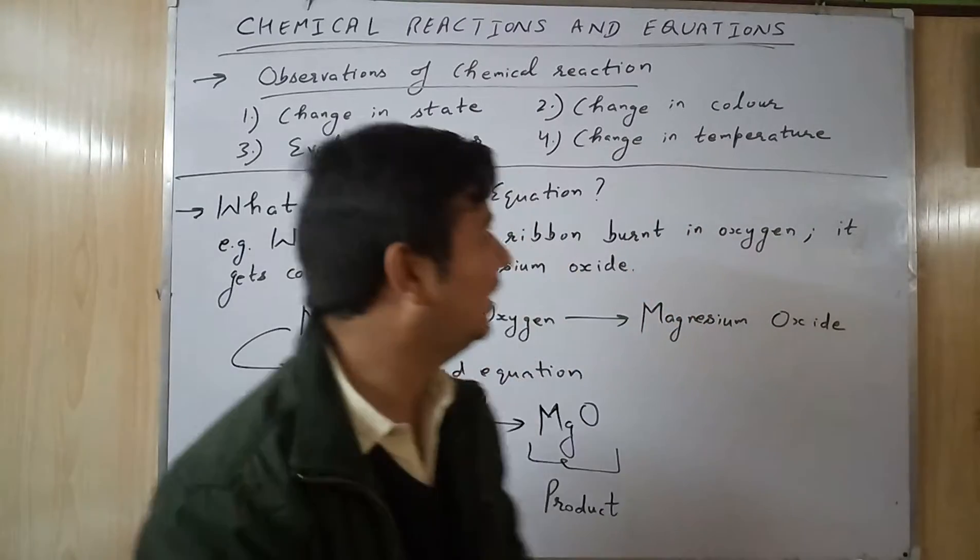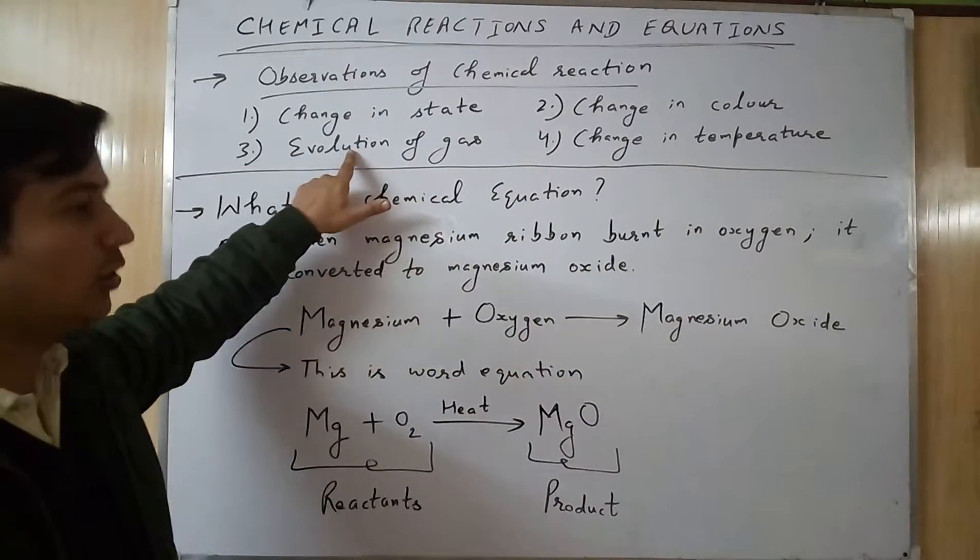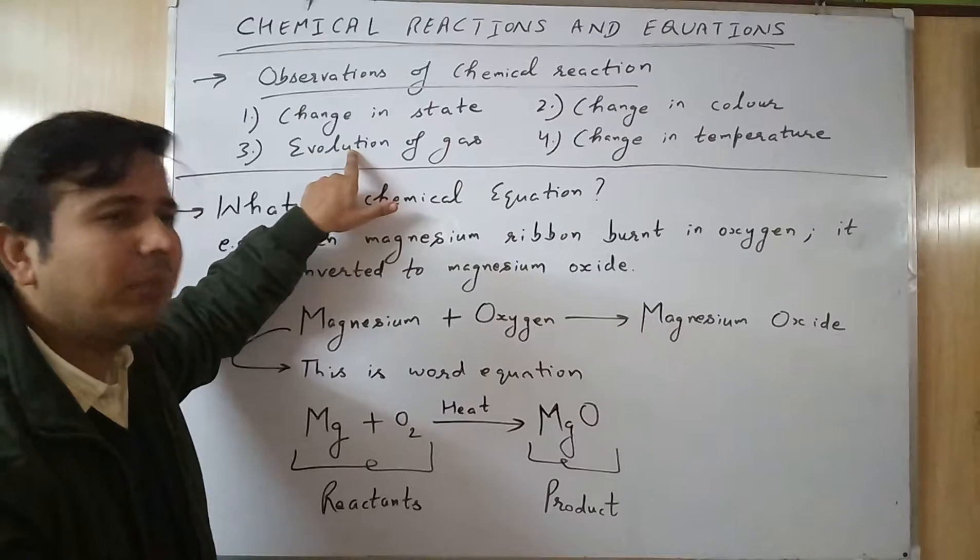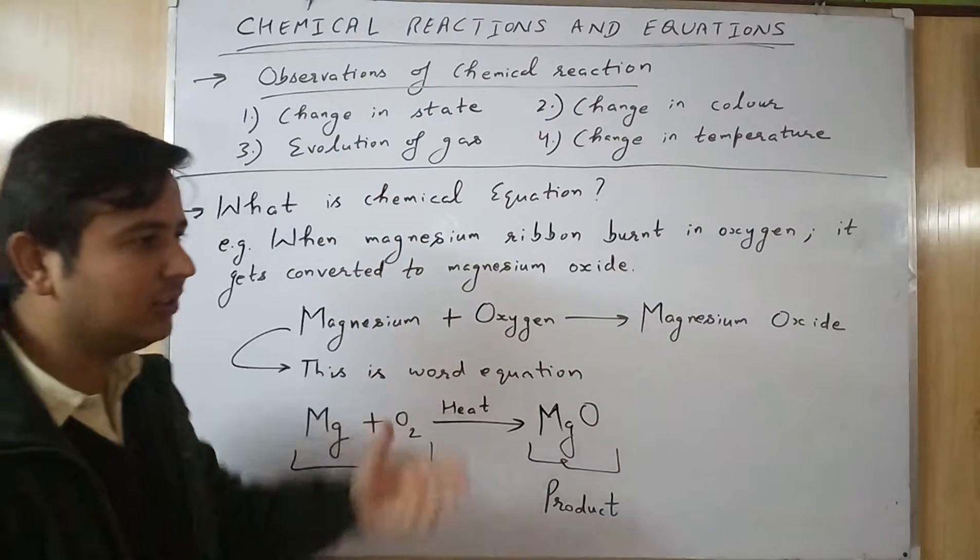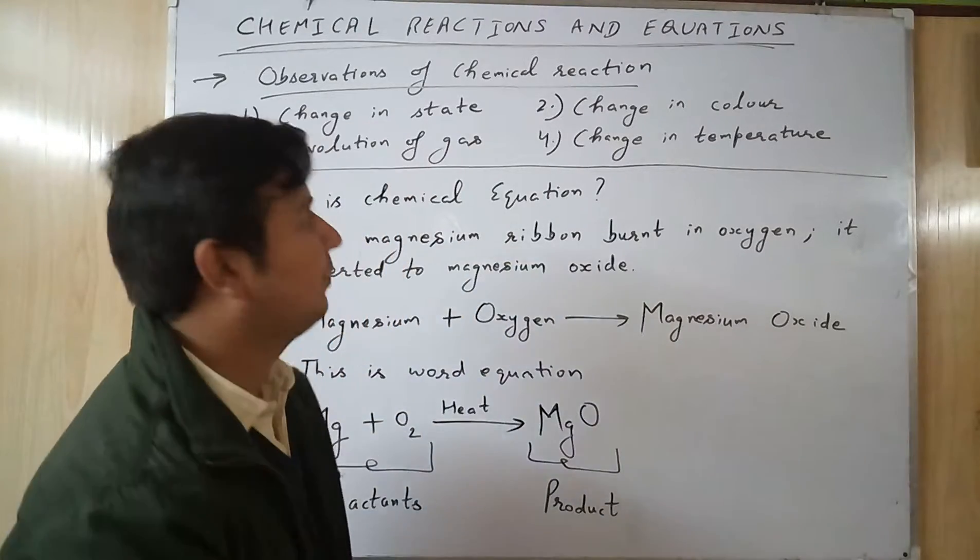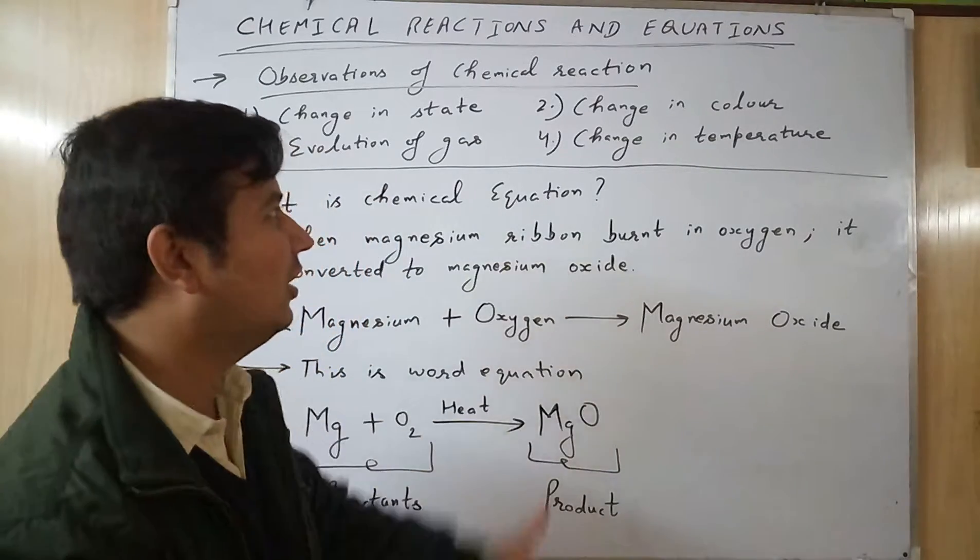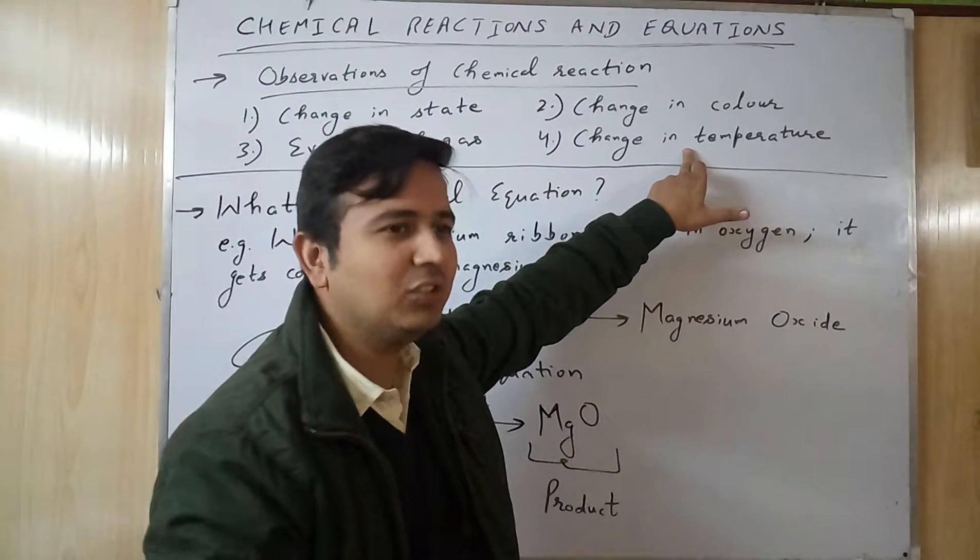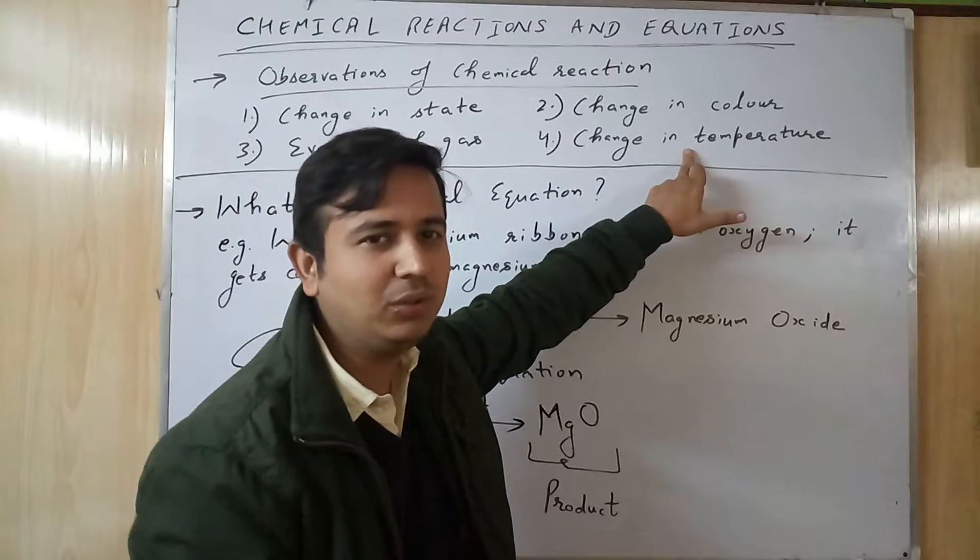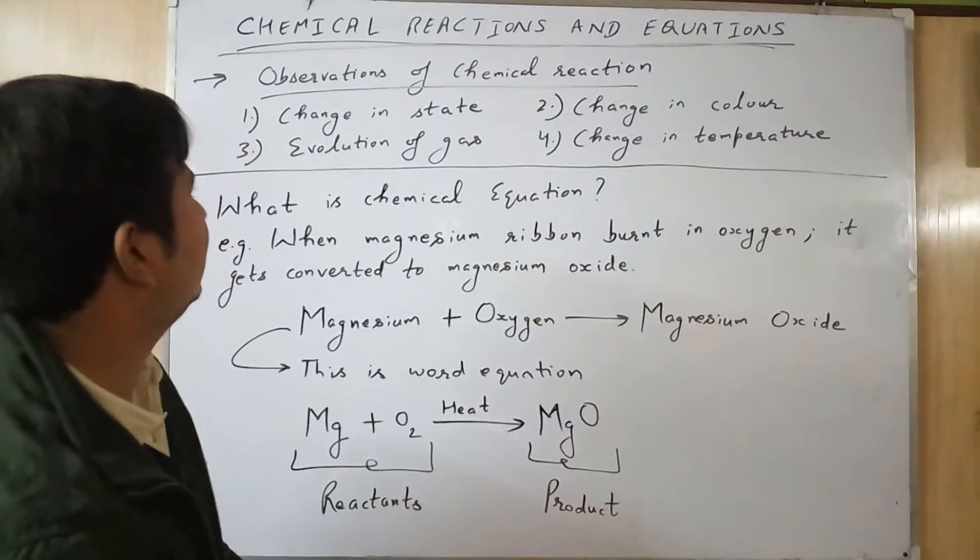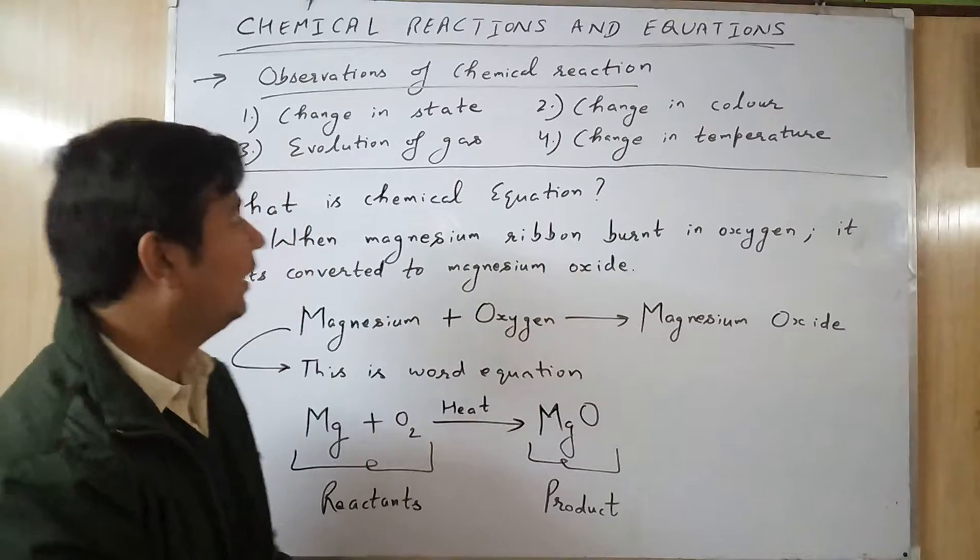Next, evolution of gas - some gas may or may not be generated, but in chemical reactions gases are often generated. And the change in temperature - you very well understand that if the temperature changes, some chemical reaction is happening. So I think you understand the observations of chemical reaction.